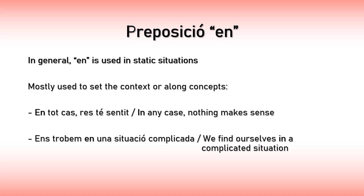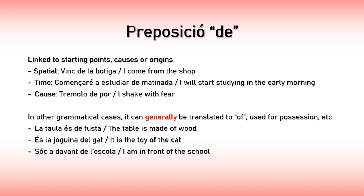Next up, preposition DE. DE marks starting points, causes for something, or the origin of something. For example, 'Vinc de la botiga' — 'I come from the shop.' This is the spatial starting point from which you come. Time-wise, 'I will start studying in the early morning' — this is also a starting point, but a time starting point. You are setting the origin in the early morning, and you also use DE. DE is also used to express cause: you use DE in these cases as well.